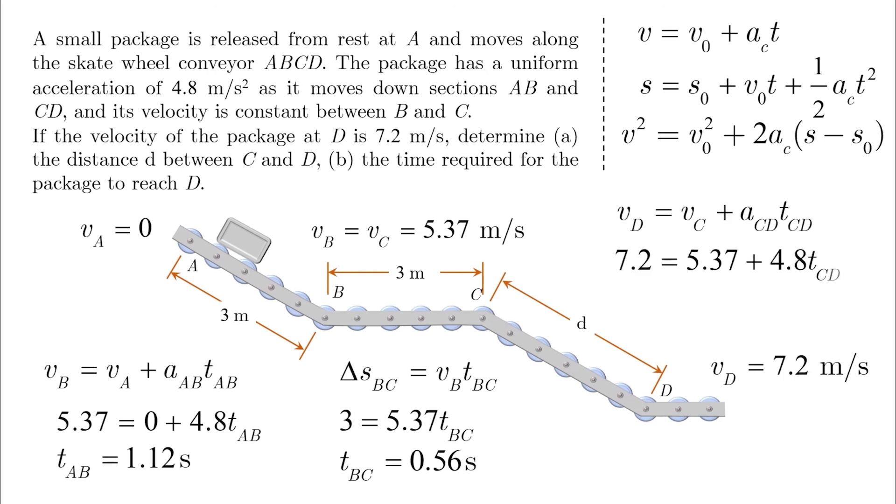The last section is done exactly like the first section and results in TCD equals 0.38 seconds. And the total time now is the sum of the three times, which is 2.06 seconds.